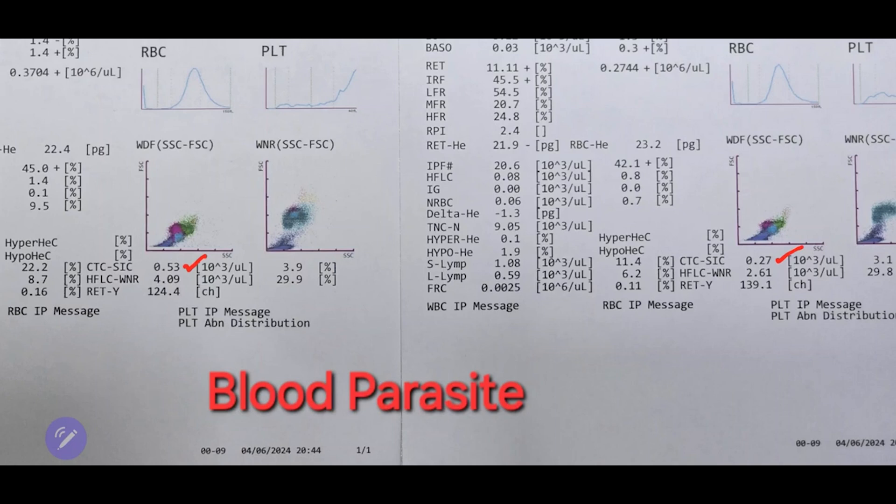Normally, MCH is measured using impedance values, but RBC-HE is measured using the RET channel, specifically the reticulocyte channel we've been discussing.